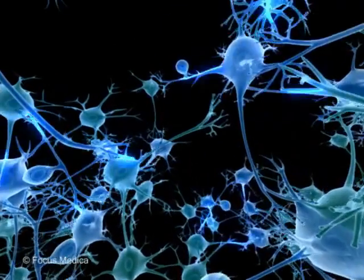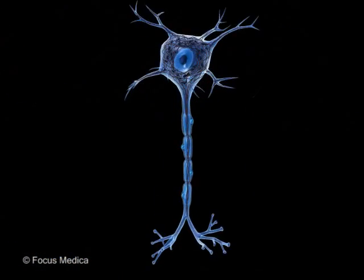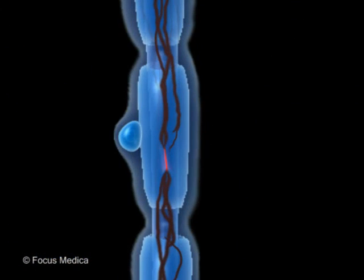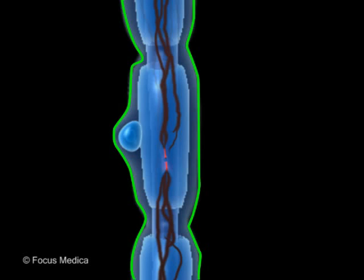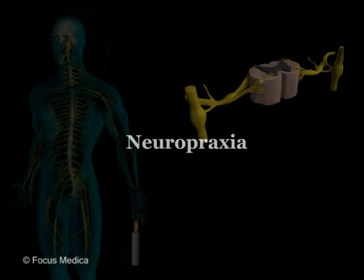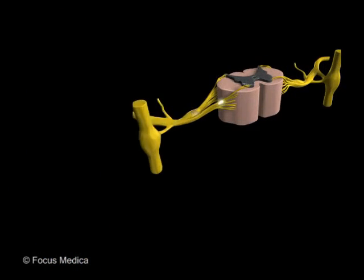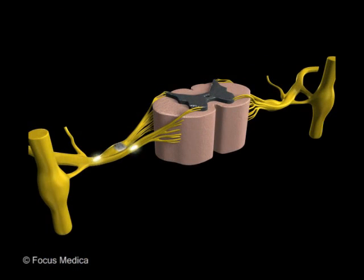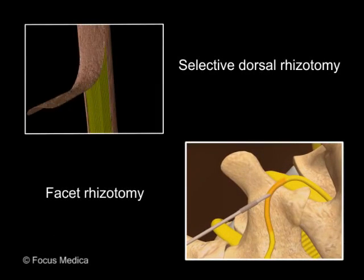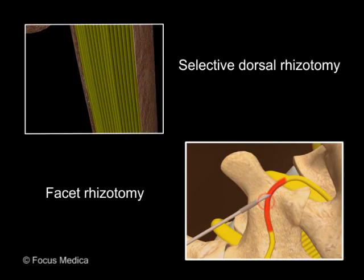Axonotmesis is a traumatic lesion caused when the axons are cut but the surrounding connective tissue is intact. Neuropraxia is the loss of nerve conduction that occurs secondary to transient nerve block. Rhizotomy is a neurosurgical procedure where one or more specific nerve roots are identified and destroyed.